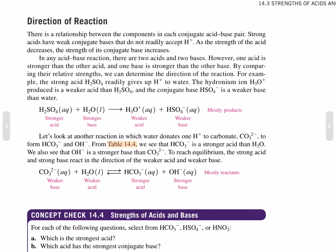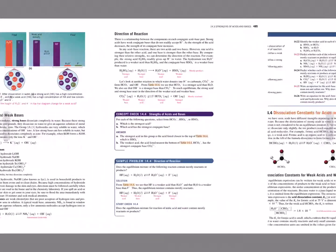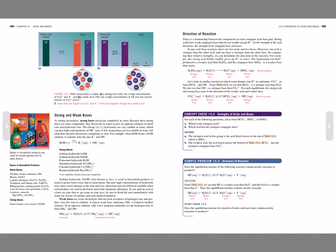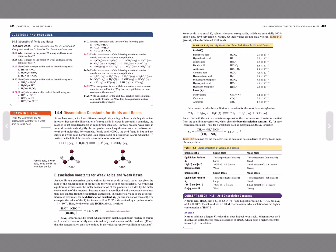For example, the strong acid sulfuric acid readily gives up protons in water. The hydronium ion produced is a weaker acid than sulfuric acid, and the conjugate base, hydrogen sulfate, is a weaker base than water. In another reaction, water donates a proton to carbonate to form bicarbonate and hydroxide. From Table 14.4, we see that bicarbonate is a stronger acid than water, and hydroxide is a stronger base than carbonate. To reach equilibrium, the strong acid and strong base react in the direction of the weaker acid and weaker base.